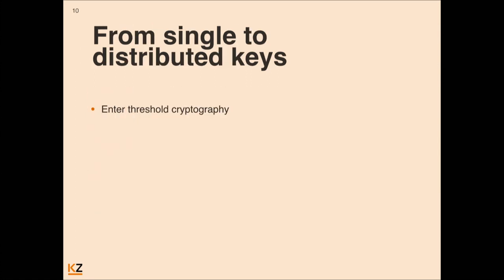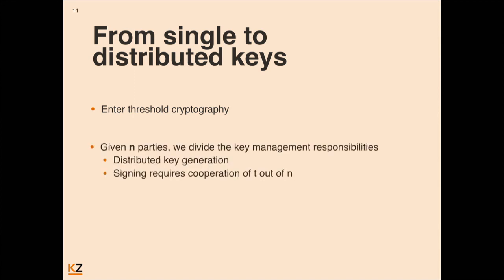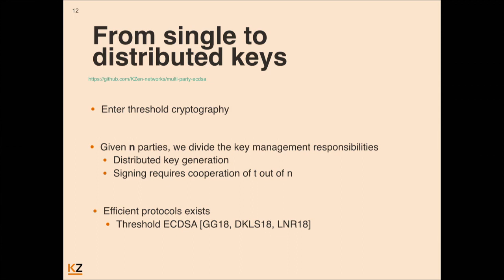Enter threshold cryptography, and specifically threshold signatures. I would focus on two functionalities: one is distributed key generation among N parties, and the second is signing that requires a threshold number T out of these N parties. The takeaways are: first, there is a parameter N that we need to decide to define the system; and second, efficient protocols for threshold signatures exist. ECDSA is considered one of the more difficult protocols to thresholdize and is unfortunately used in Bitcoin, Ethereum, and many other chains. In just the past 12 months, we saw three different papers giving very nice and efficient protocols. I encourage you to check our GitHub and try them.